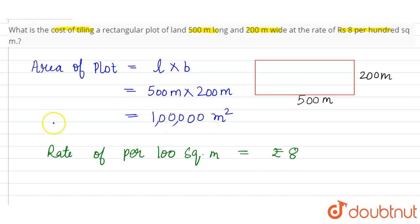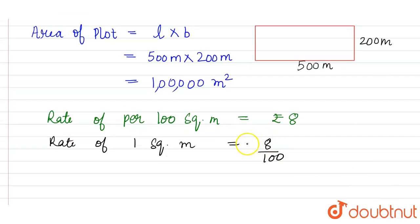To find the cost of 1 square meter, firstly, rate of 1 square meter equals 8 divided by 100.